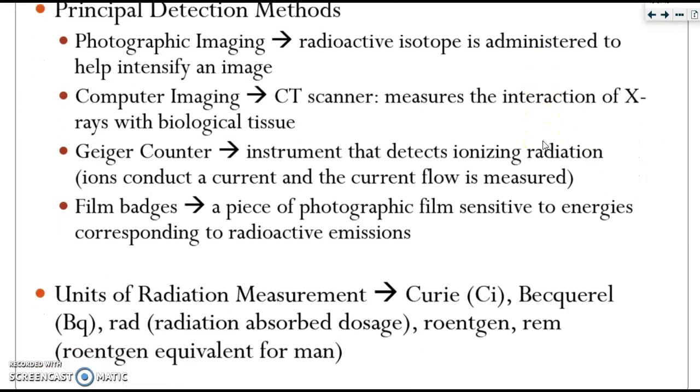There are also a variety of different units of radiation. We have the Curie, which is used to measure activity, usually. Becquerel, a RAD, as well as a few others. And that concludes our study of nuclear chemistry.